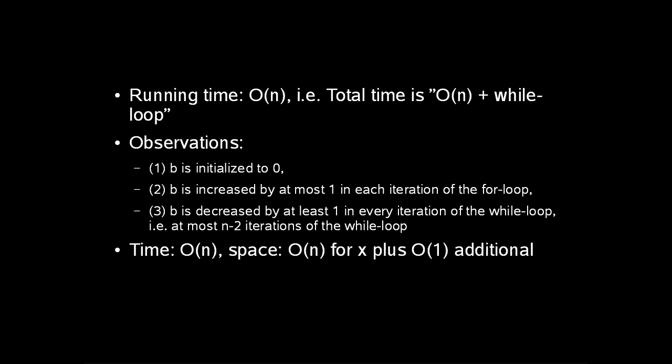The running time of this: if we disregard the while loop, then the time is order n, so total time is order n plus total time of the while loop. We observe that b is initialized to 0. Second, that b is increased by at most 1 in each iteration of the for loop. The last thing is that b is decreased by at least 1 in every iteration of the while loop, i.e. at most n minus 2 iterations of the while loop. The time is order n, and the space is order n for our string x plus some constant work additional.